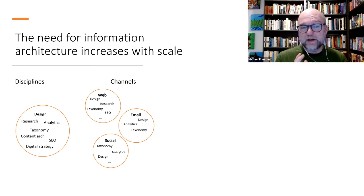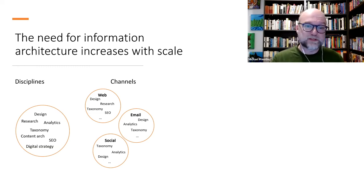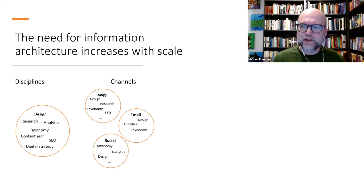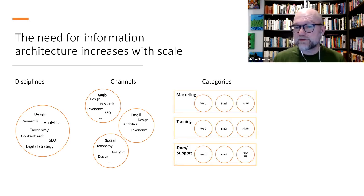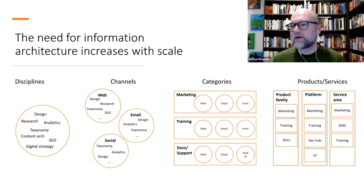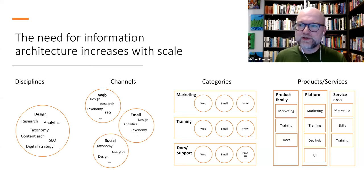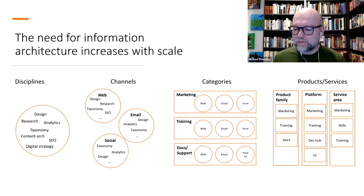Then you add different channels: the website, the email program, the social programs — each may have their own taxonomy requirements, research requirements, and SEO. All of those need to be connected and consistent, or the customer starts to feel a little lost. And if you start thinking about different categories of content — marketing content, training, documentation and support — each having their own channels supported by their own disciplines, and then multiply that by different product families, platforms, and service areas, that customer relationship starts covering a lot of different area. The need to keep all of that connection and relationship managed, consistent, and coherent starts to be a real job that crosses a lot of different people, departments, and organizations.